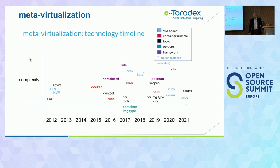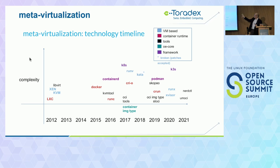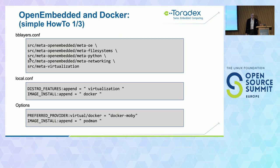I mentioned meta-virtualization, and Bruce gave me permission to steal the slide. He did want me to give the warning that this is about six months out of date and he's got an updated version. This kind of gives you an idea of all the things that are included in there — it's a lot more than just containers. It's all sorts of hypervisors and things like that, and you can get an idea from the timeline of what was available when. If you start using this stuff with OpenEmbedded, you will eventually need to use meta-virtualization.